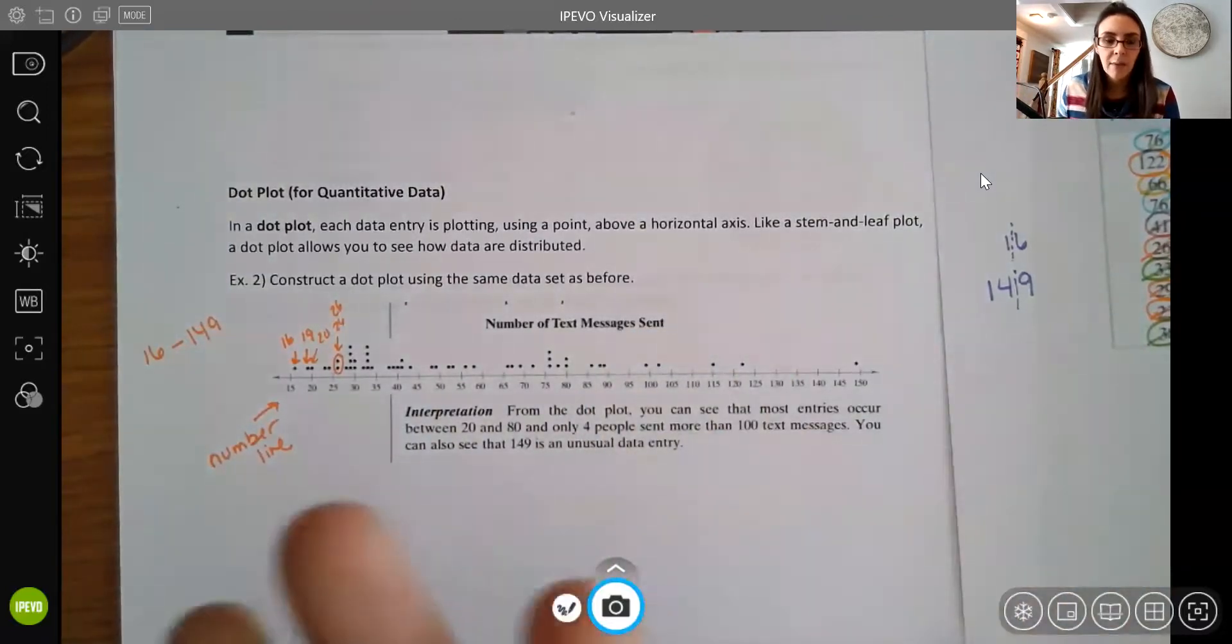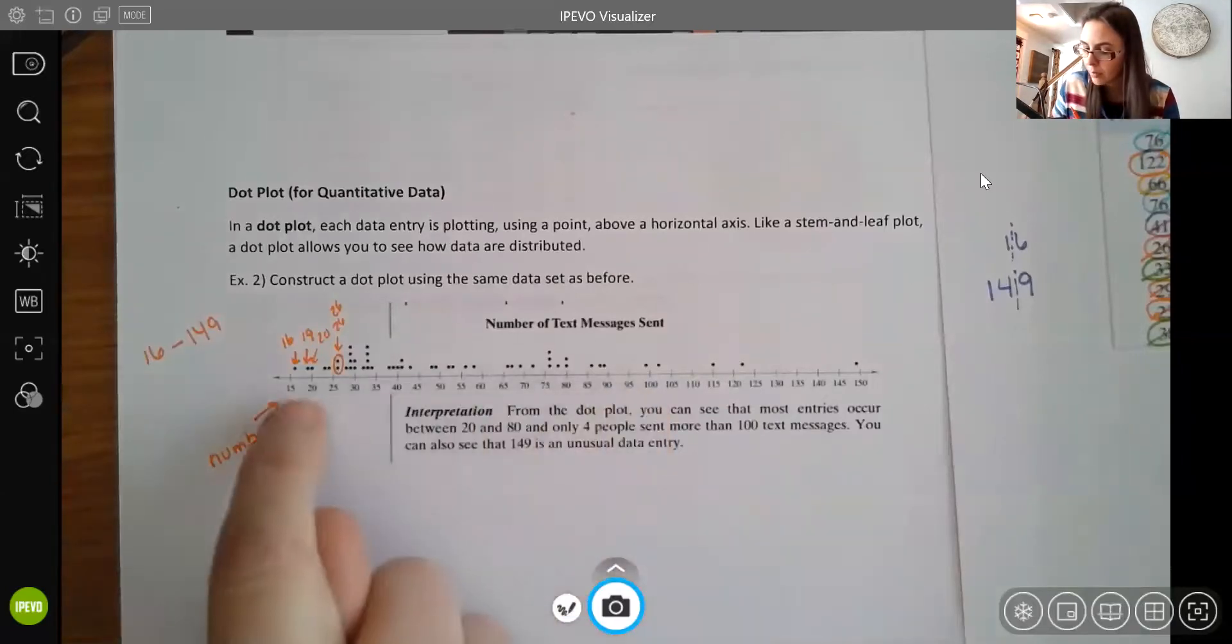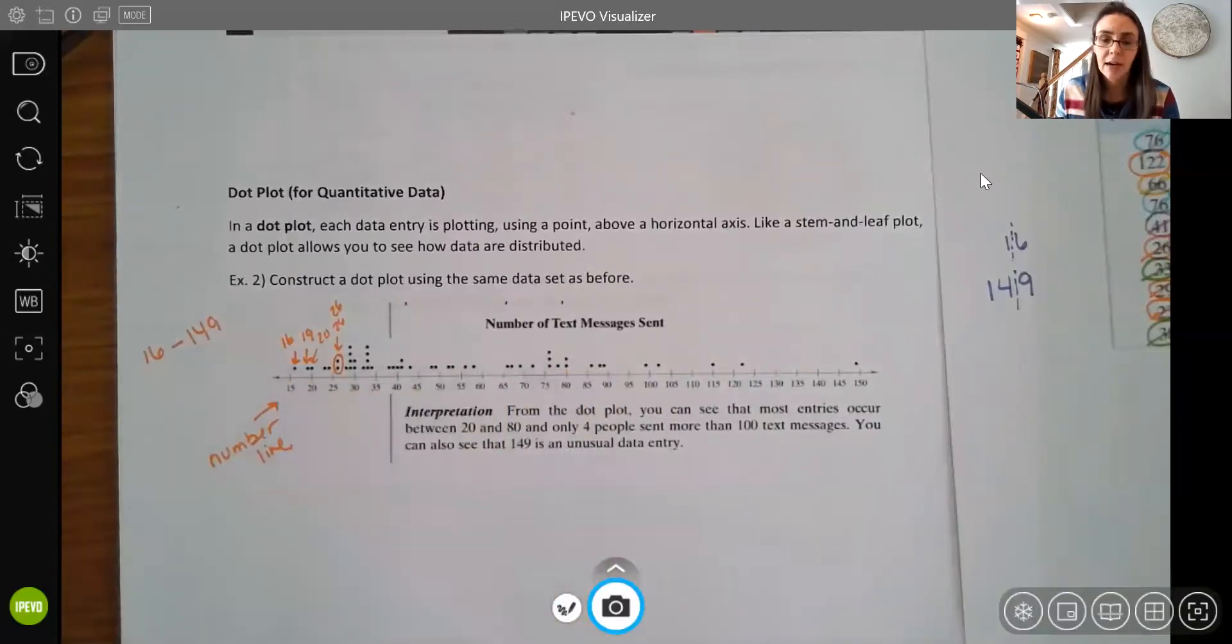So we can see that if I was to make a quick assumption, I would say that most people send less than 100 text messages. Right. Really, if you look, most of the data is actually probably between like 20 and 80 here. But most people are sending at least less than 100 text messages a day. So we can kind of quickly see the patterns and then also see a lot of our repeat values very quickly as well, using one dot for each value. Again, going up kind of a column there to see those repeat values.